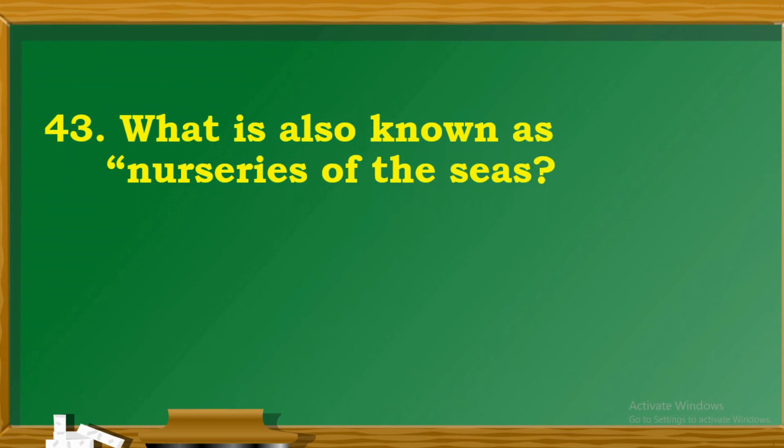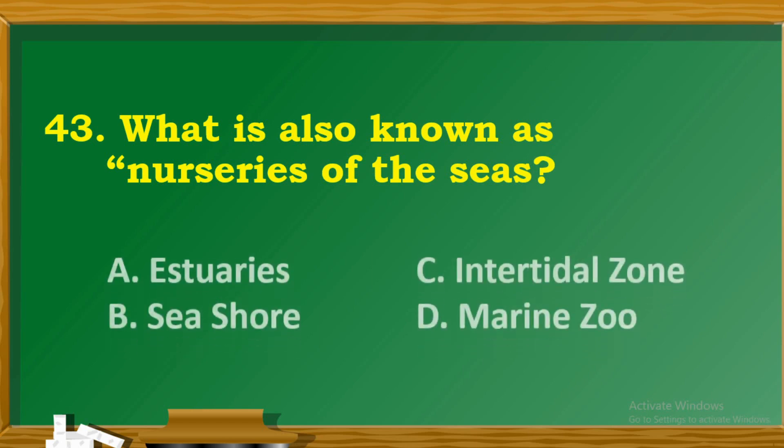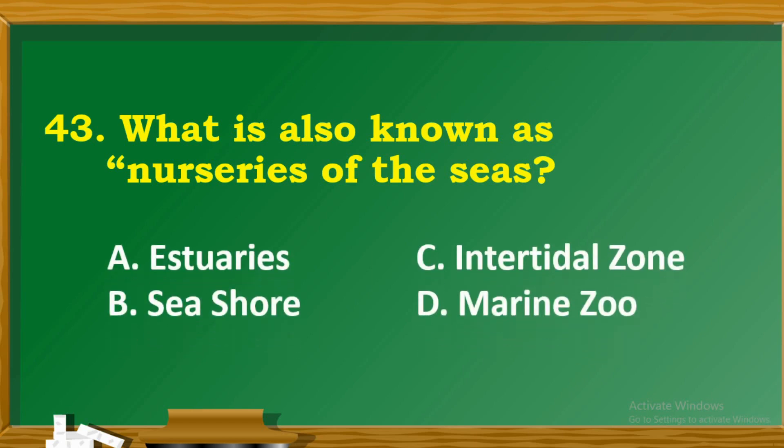Question 43: What is also known as the nurseries of the seas? A. Estuaries. B. Seashore. C. Intertidal zone. D. Marine zoo.